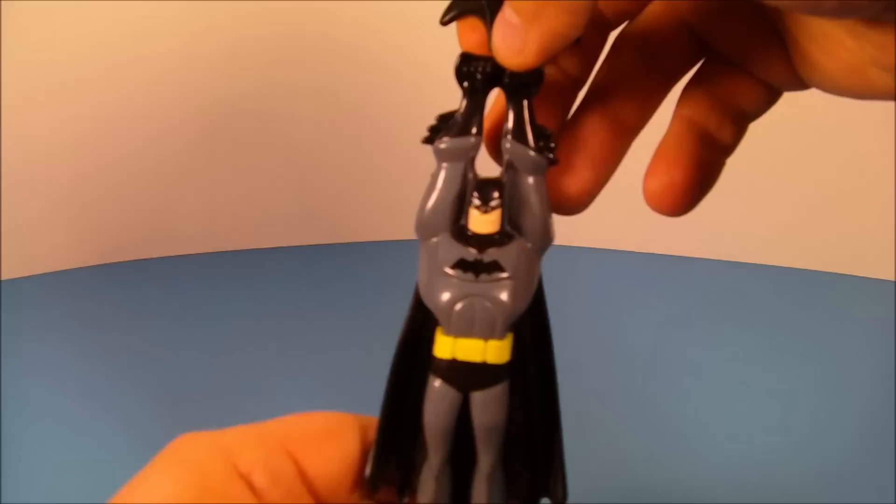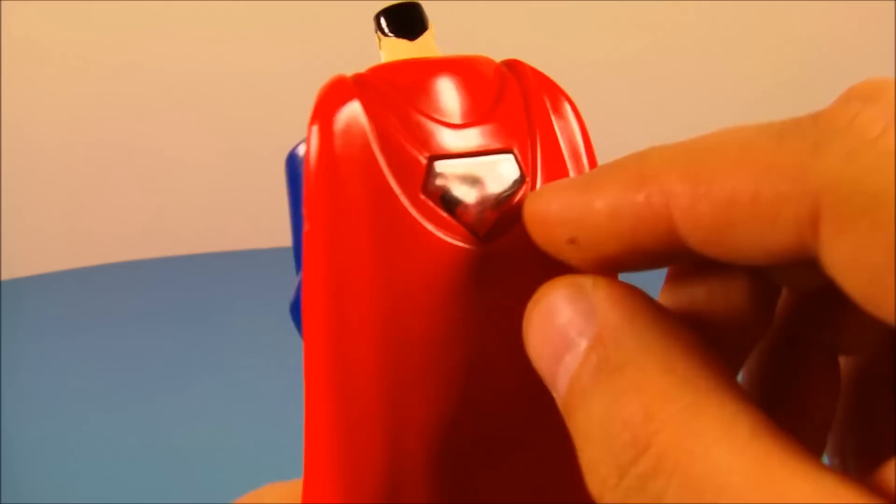Next is solar powered Superman. So you see Superman here, he's got this clear bit on the back. You hold this up to the light and then it makes the clear part of his S for Superman on his chest light up. It's got some really cool light piping going on.